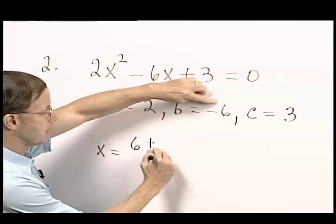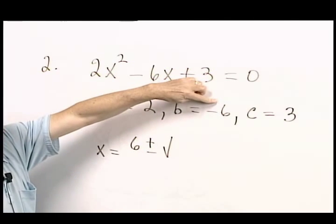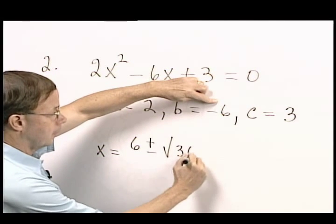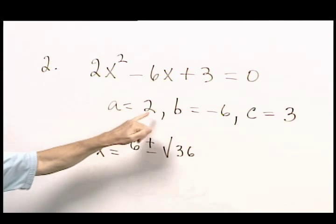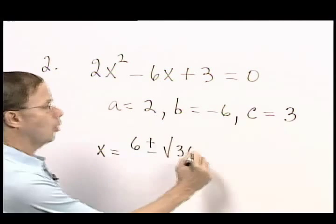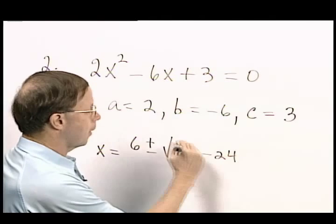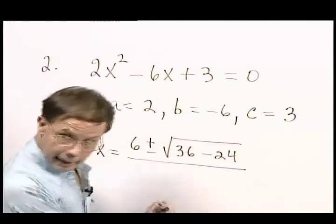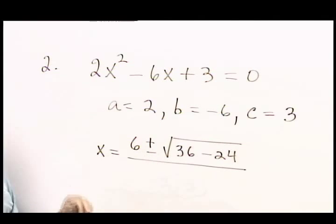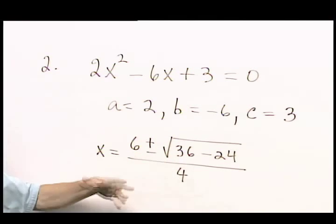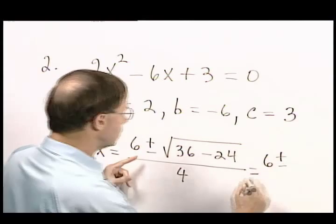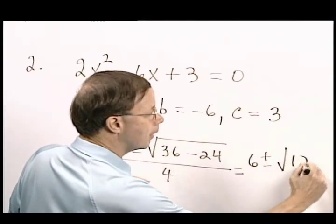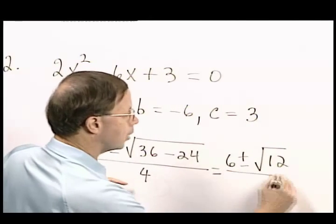plus or minus the square root of B squared, minus 4 times A times C, minus 2 times 3 will be negative 24. And all of this is divided by 2A.